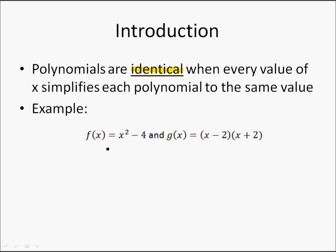Suppose I have two polynomials here: f(x) = x² - 4 and g(x) = (x - 2)(x + 2). If I expand g(x), I will see that it's x² - 2², which is the same as x² - 4.